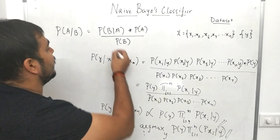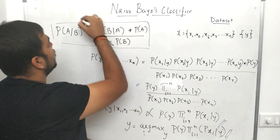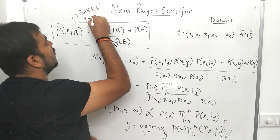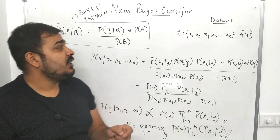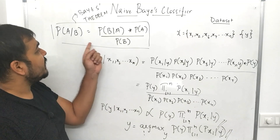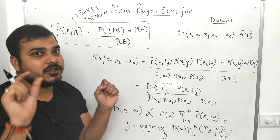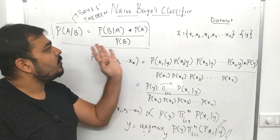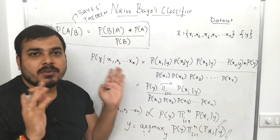The base of Naive Bayes classifier is Bayes theorem. This formula I have displayed is called Bayes theorem, and I hope yesterday I discussed about it. If you haven't seen that, go and see my previous tutorial in my complete machine learning playlist. This is Bayes theorem, and it is derived by conditional probability, which I discussed yesterday.